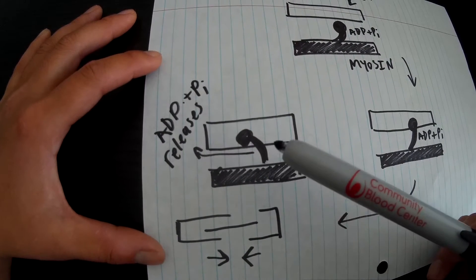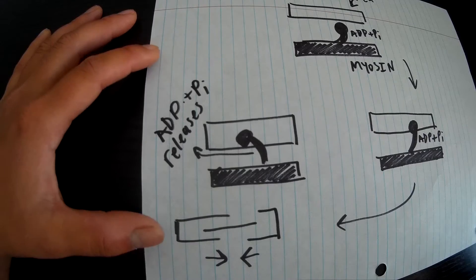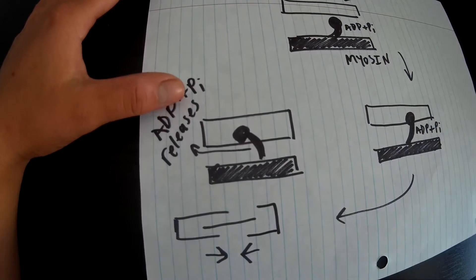For the contraction to occur, basically ADP and Pi have to release from the myosin head to create a power stroke.